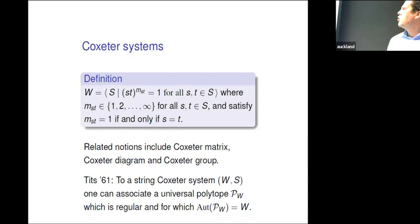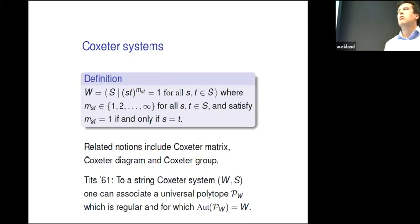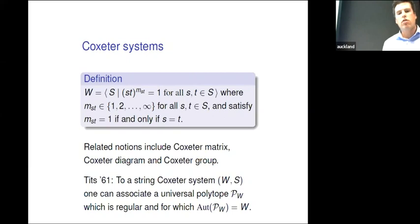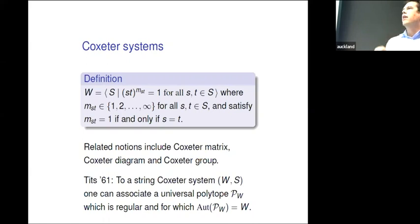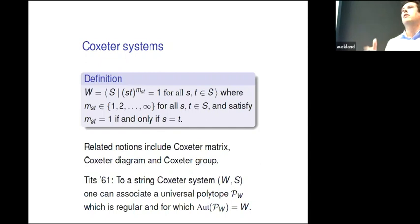Why do we suddenly talk about Coxeter systems? We were talking about polytopes. There is an old result by Jacques Tits that says if you have a string Coxeter system — a particular special one I'll explain later — then you can associate a universal polytope to it. A polytope being universal means: if I tell you what the faces look like and what the vertex figure looks like, there is one polytope which covers all others that have the same property. For instance, if I tell you the faces are squares and the vertex figure is a triangle, then the cube would be the universal polytope.